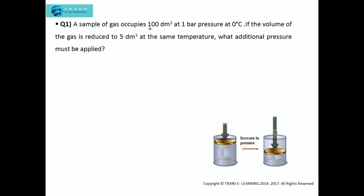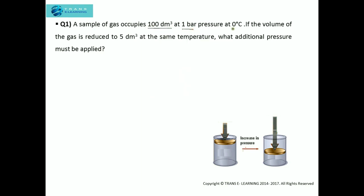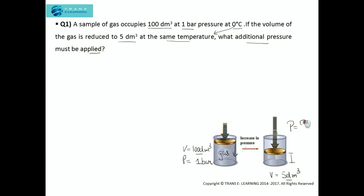A sample of gas occupies 100 decimeter cube at one bar pressure at zero degrees Celsius. If the volume of the gas is reduced to five decimeter cube by applying pressure through the piston, decreasing the volume to five decimeter cube at the same temperature of zero degrees Celsius, what additional pressure must be applied? We have to find the pressure at volume five decimeter cube.